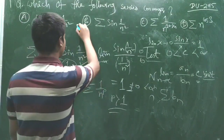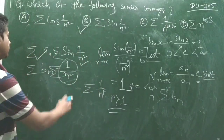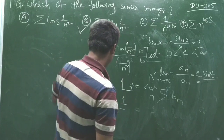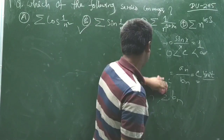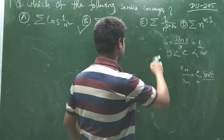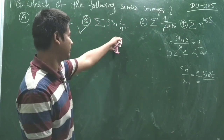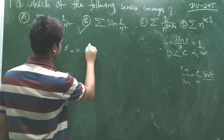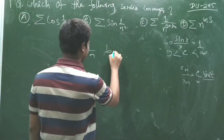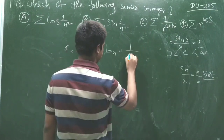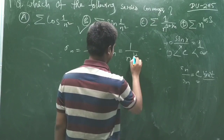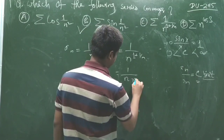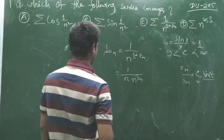So option B is the correct answer. Now for option C, similarly we use the limit comparison test. Take aₙ = 1/n^(1 + 1/n) and bₙ = 1/n. Note that 1/n^(1 + 1/n) equals 1/n · n^(−1/n), which equals (1/n) · (1/n^(1/n)).